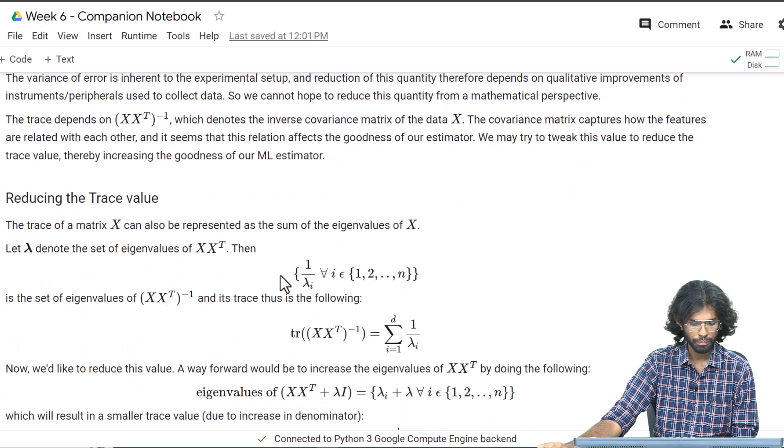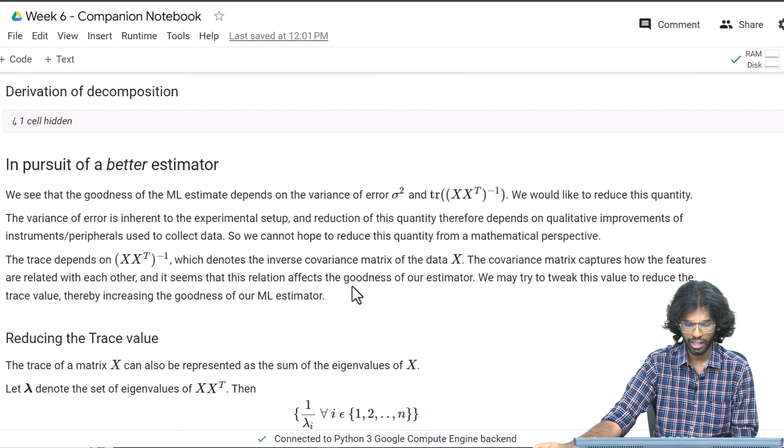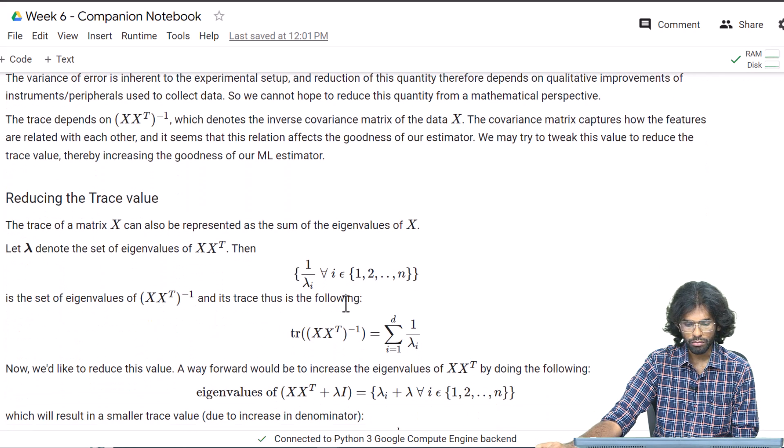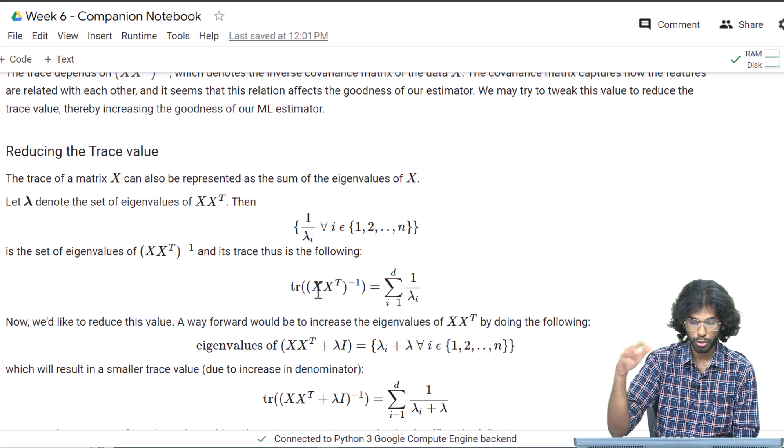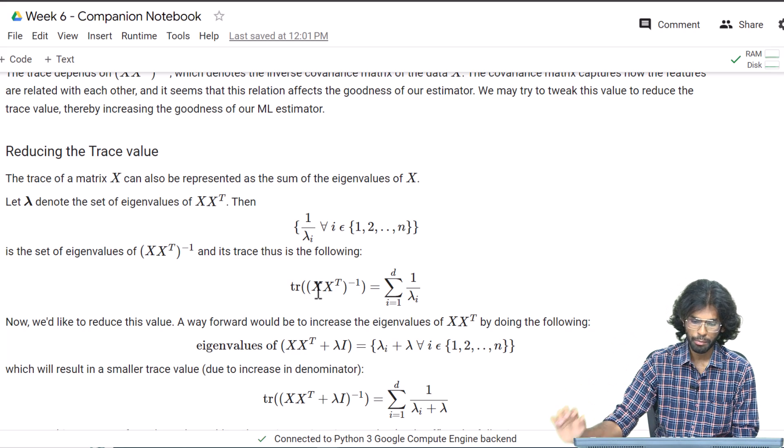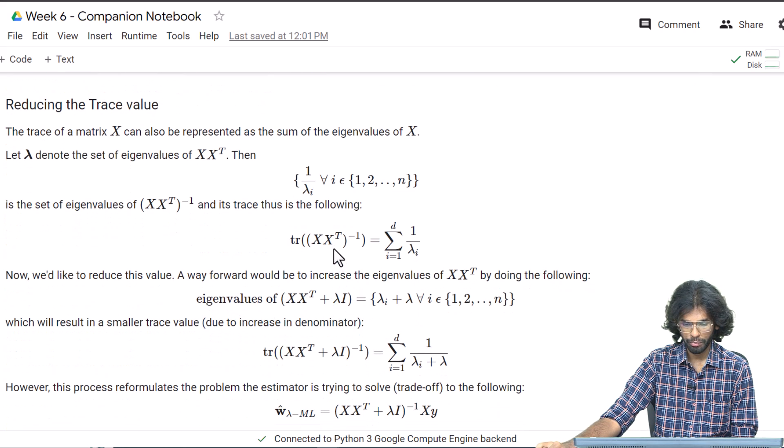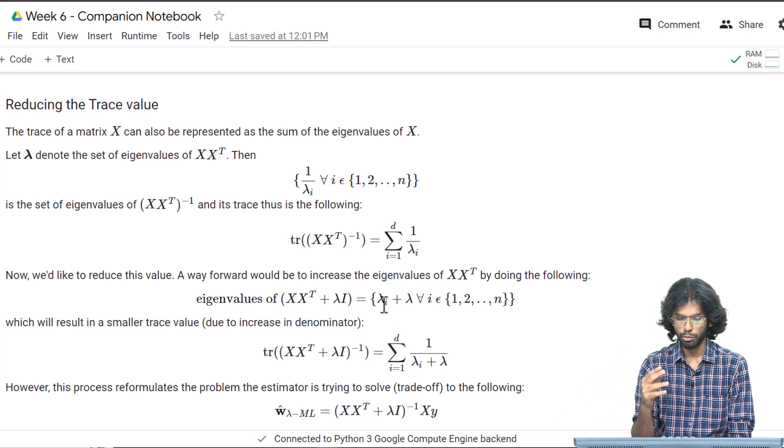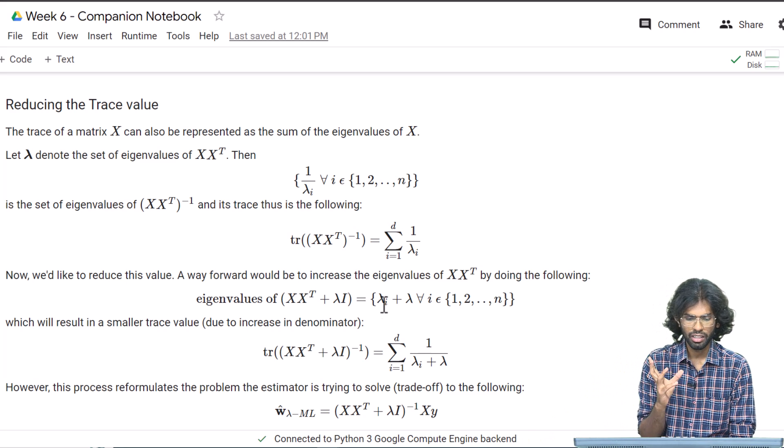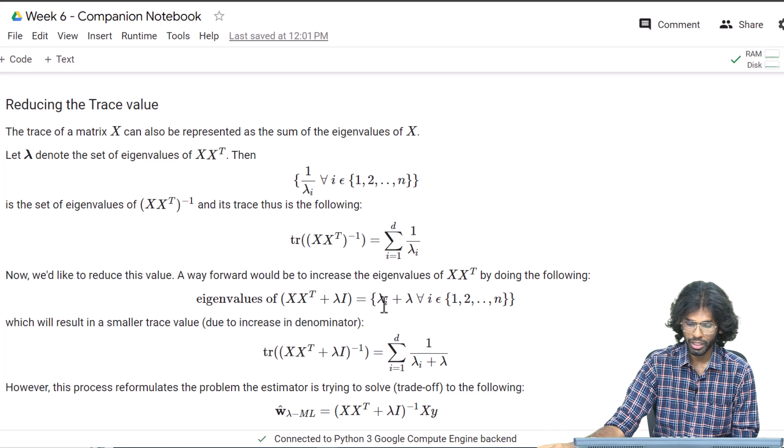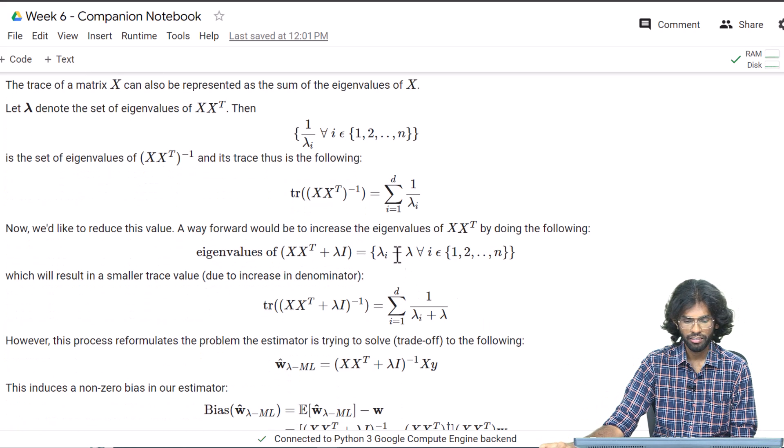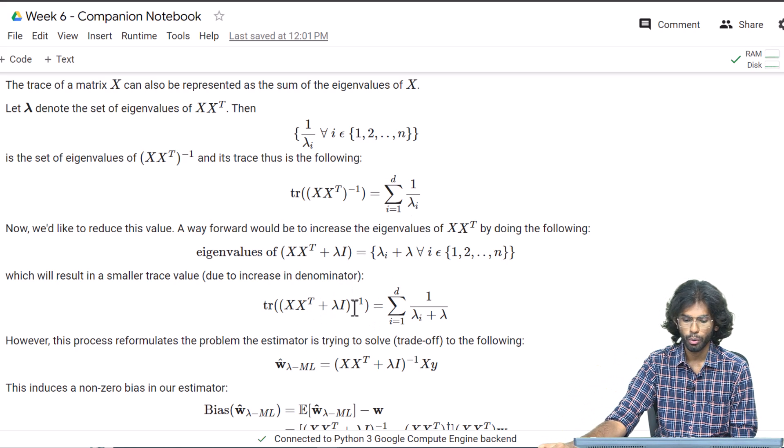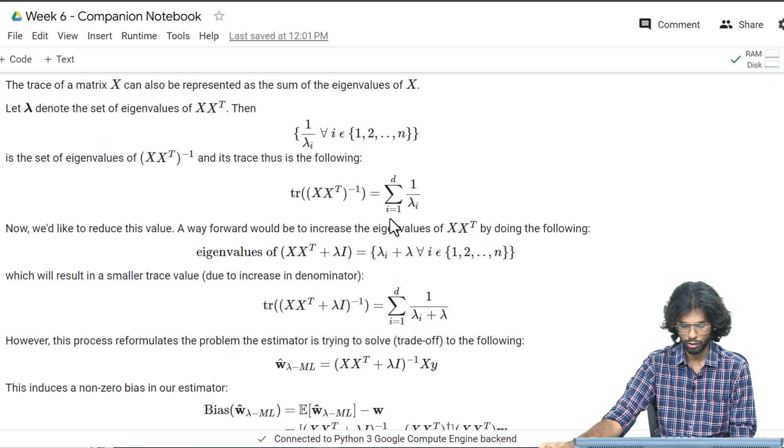How would we go about reducing this trace? We will first look at the eigenvalues of XX^T. If we consider them to be λ_i, then the trace of (XX^T)^-1 is just the sum of the reciprocals of our λ values. If we change XX^T to XX^T + λI, we are essentially increasing the eigenvalues by some λ. We will fix λ to be strictly positive, and when we do that, the reciprocal of a larger value decreases. Hence, the trace of this new matrix will be strictly lower.